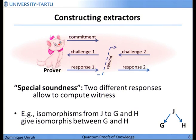Many such sigma protocols — three-message zero-knowledge protocols — have the following property called special soundness. This means that if you have two different responses to two different challenges, from those two responses we can efficiently compute a witness. For example, in the graph isomorphism protocol, the commitment would be a graph J, one response would be an isomorphism to G and the other to a graph H, and from this we can compute an isomorphism between G and H, which is what we were interested in.